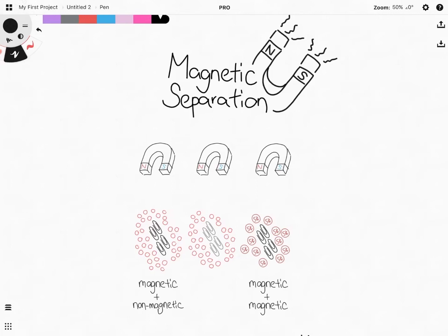For example, let's say I have this mixture over here. This is a mixture of iron paperclips which is magnetic in nature as well as sand that is non-magnetic in nature.